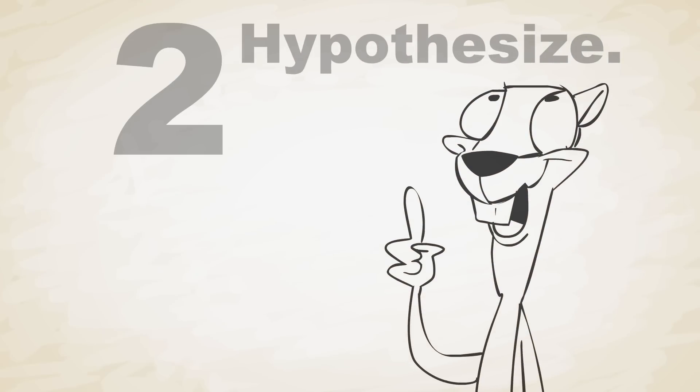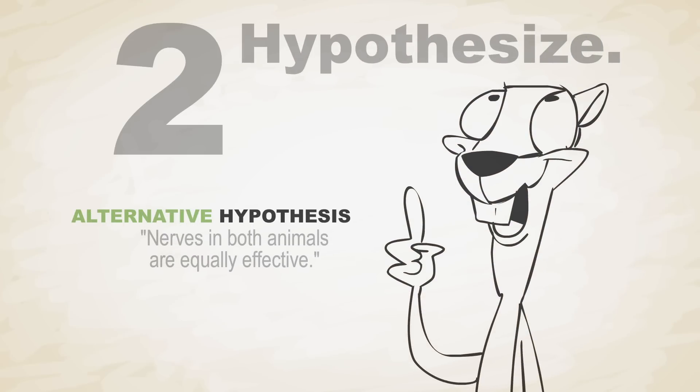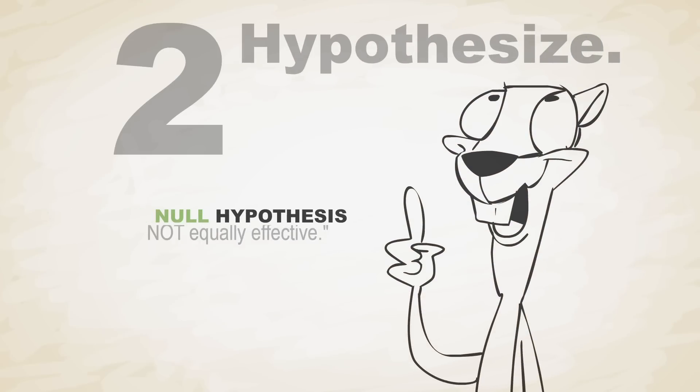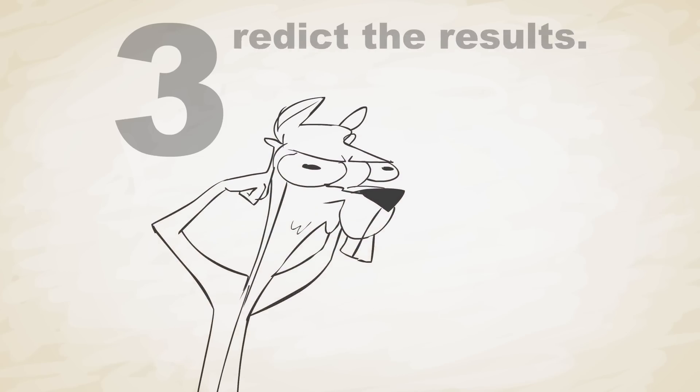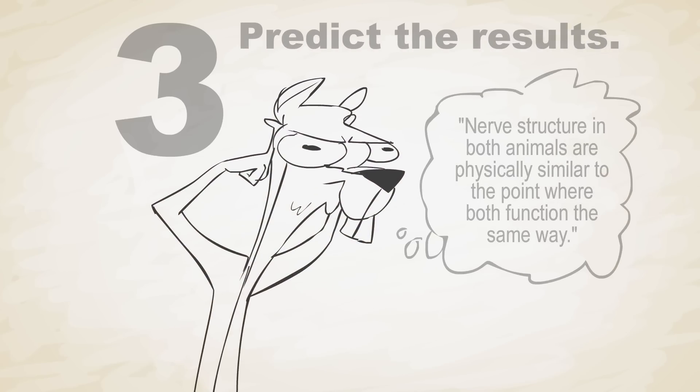Then you propose a hypothesis — a guess that can be proven true or false. Next, you make a prediction about the results of a test.